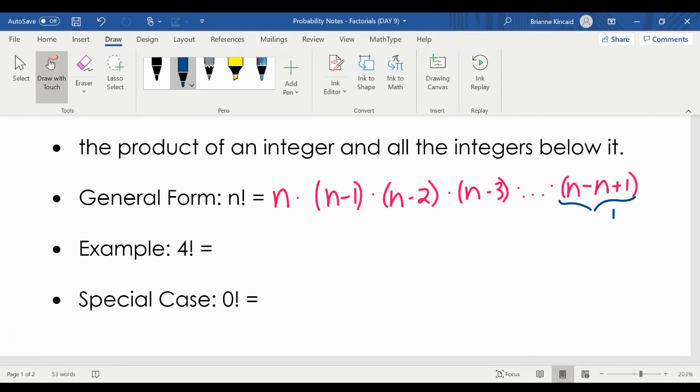So for example, if we have 4 factorial, that would be 4, 1 less than 4 is 3, 1 less than 3 is 2, 1 less than 2 is 1. We stop at 1 because if you were to continue the pattern and go down to 0, you would get 0 as an answer every time, because 0 times anything is 0.